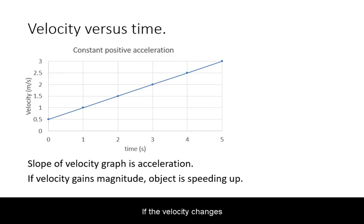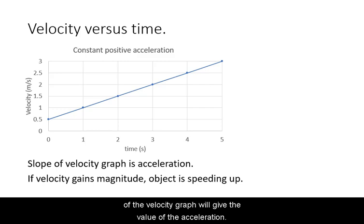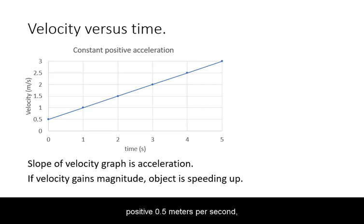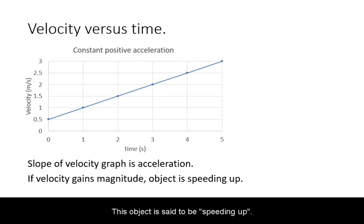If the velocity changes through time, then the object has an acceleration. The slope of the velocity graph will give the value of the acceleration. In this example, the object starts with a velocity of positive 0.5 meters per second, and after 5 seconds will have gained a velocity of 3 meters per second. This object is said to be speeding up.